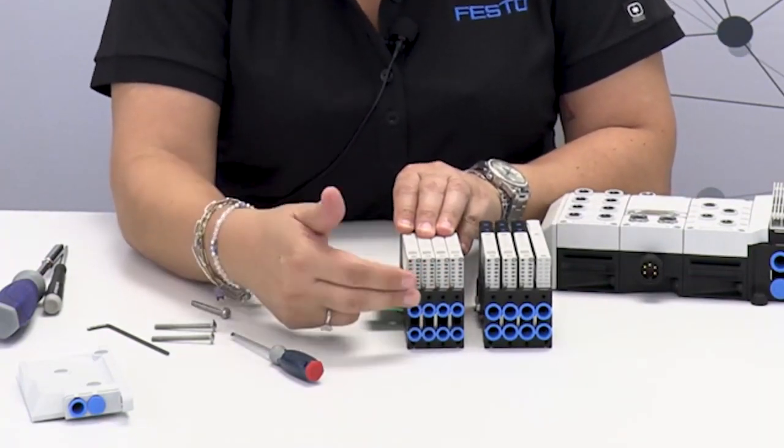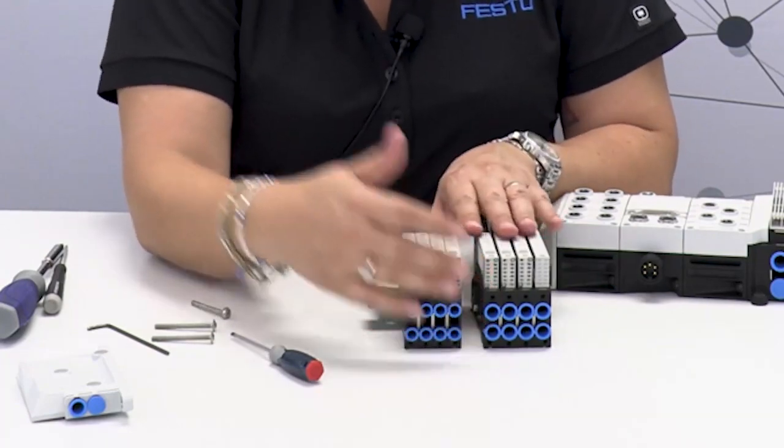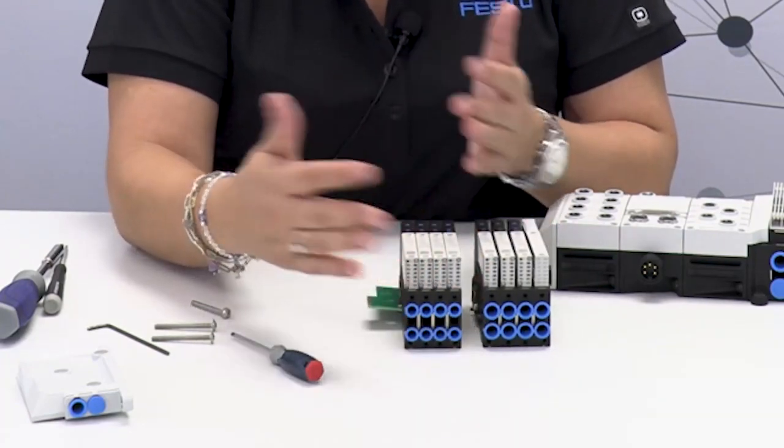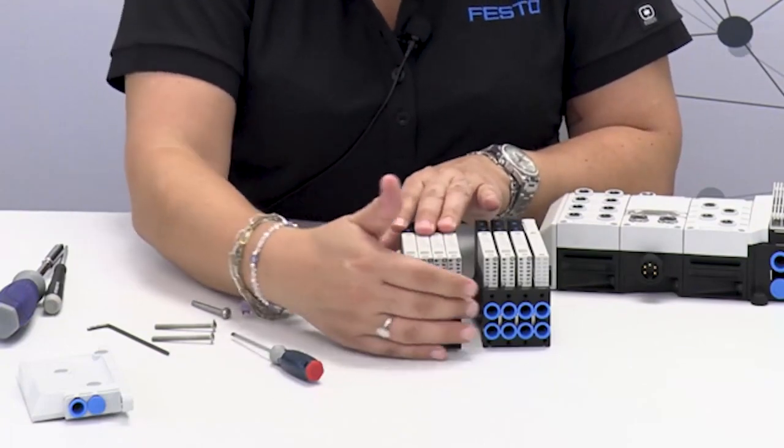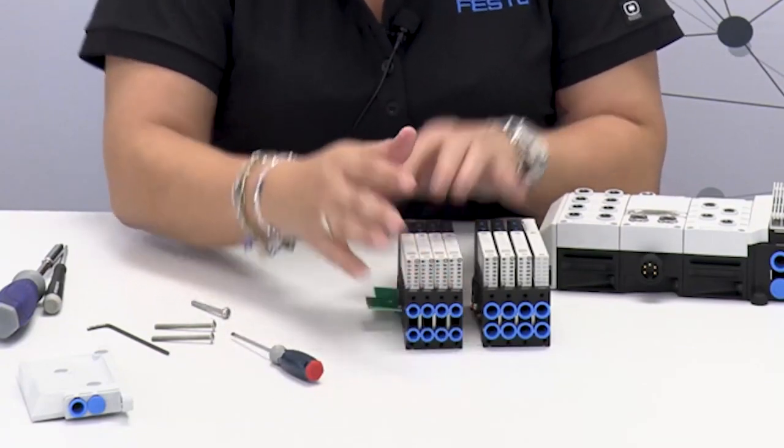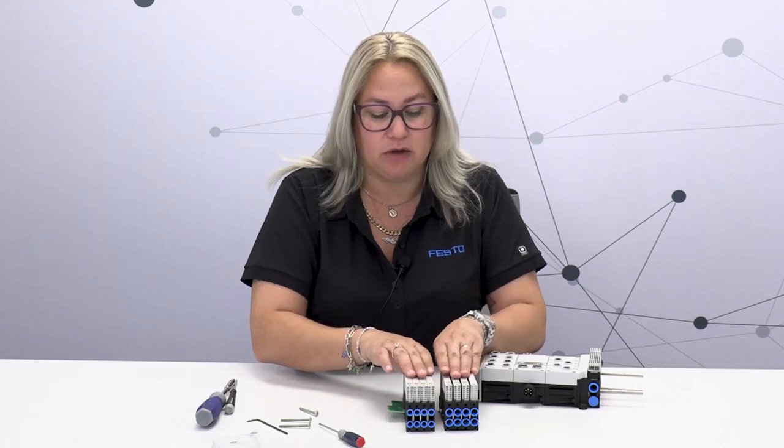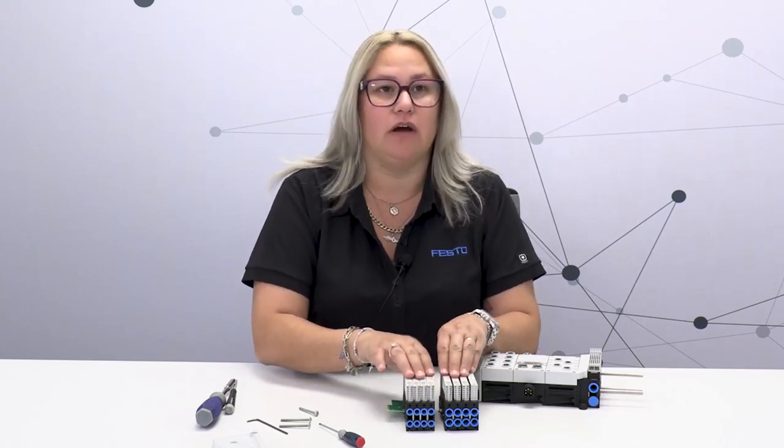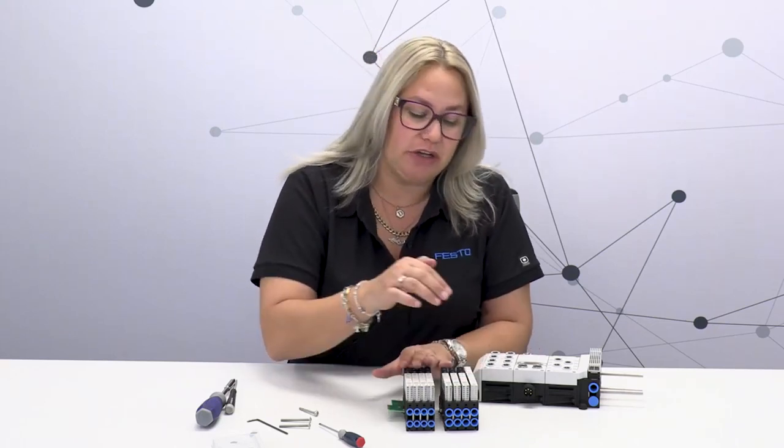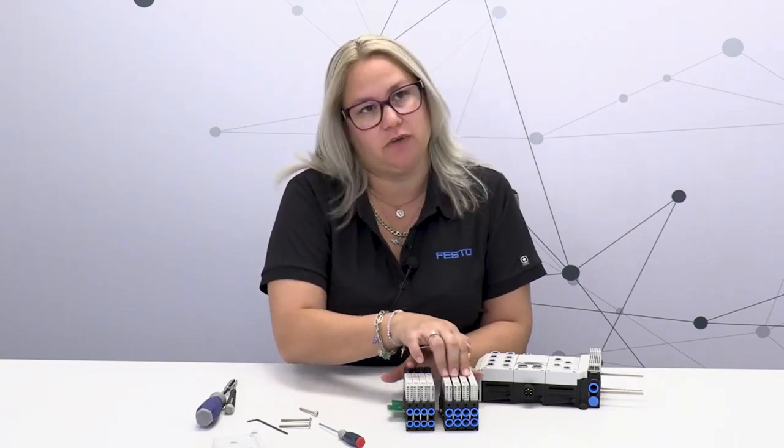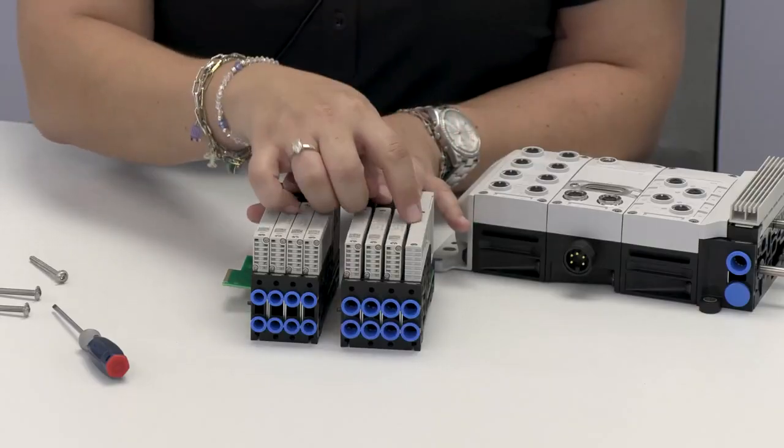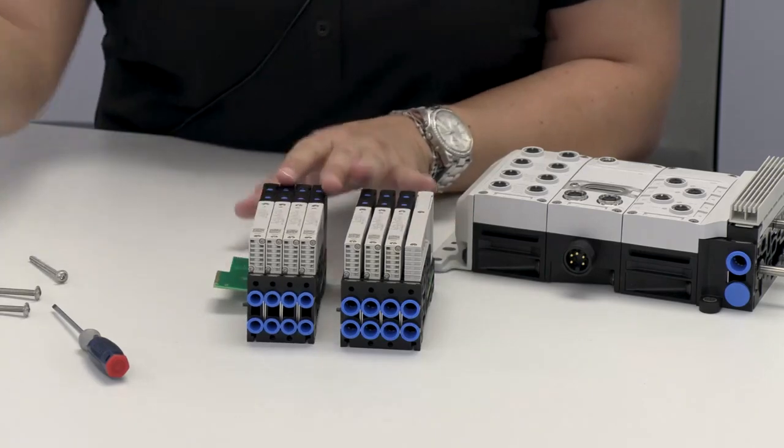We have options of six millimeters or one quarter, one eighth, eight millimeters, five sixteenths, all the different options and it's just a matter of changing the sub base. This really allows for a lot of optimization in the machine. You can have some smaller valves with larger flows. This valve can flow up to 670 liters per minute.